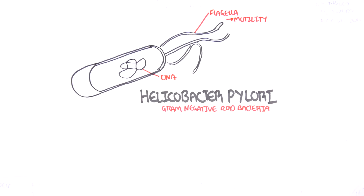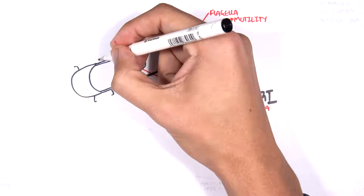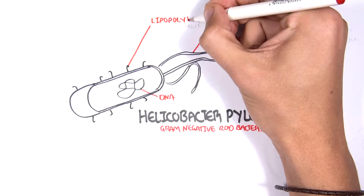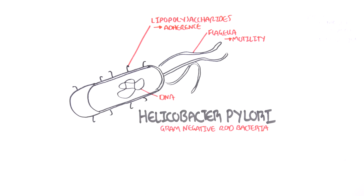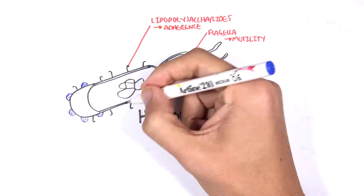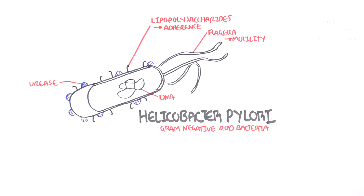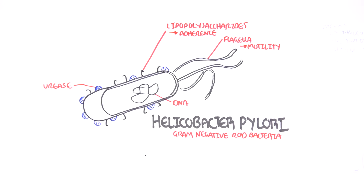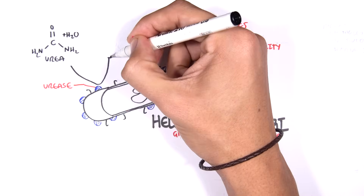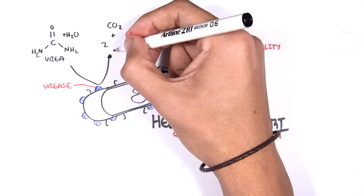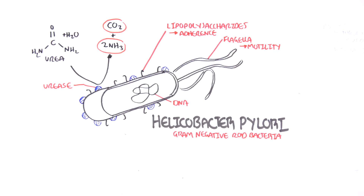Some important virulence factors that Helicobacter pylori possesses include lipopolysaccharides, which help in adhering to cells. Another important virulence factor is an enzyme on the surface known as urease. Urease is very important in H. pylori survival — what urease does is convert urea and water to carbon dioxide and ammonia.